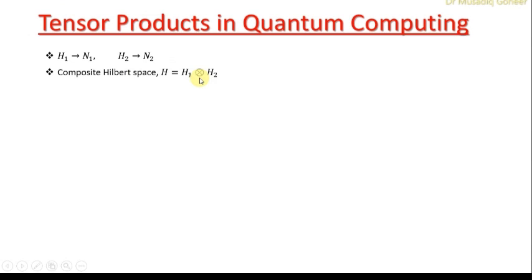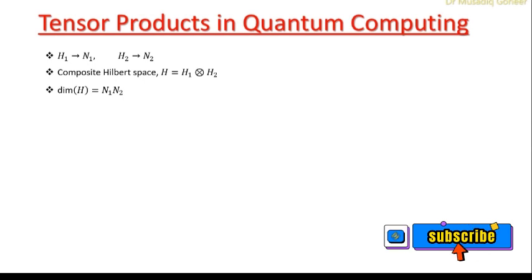The tensor product is the mathematical tool to construct the composite Hilbert space between the two sub Hilbert spaces which belongs to two different particles. This sign is used for tensor product; it is also known as the Kronecker product. The dimensions of the composite Hilbert space will simply be the multiplication of the dimensions of N1 and N2.